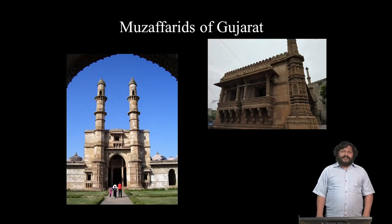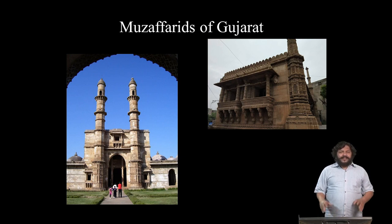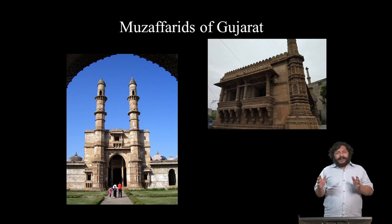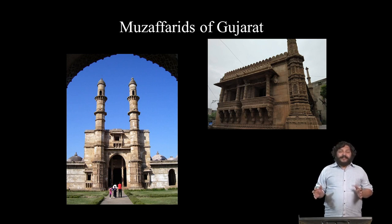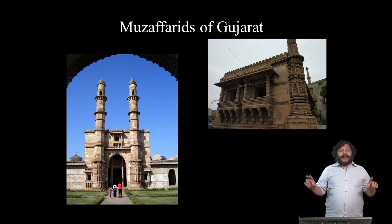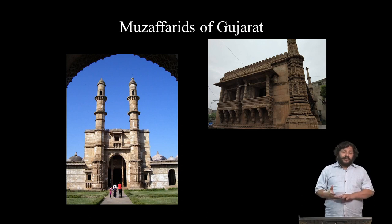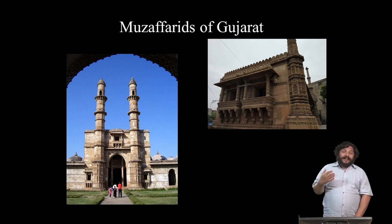Similarly, the Muzaffarids of Gujarat, who in 1411 declared independence, developed a style of architecture unique to the region, drawing upon a rich legacy of temple architecture and replicating motifs and stock architectural elements from Jain temples at places like Dilwara. The Gujarat sultans evolved an architecture very distinguished from the other Sultanates. The yellowish sandstone they used was unique to them, but really tied in with the region.